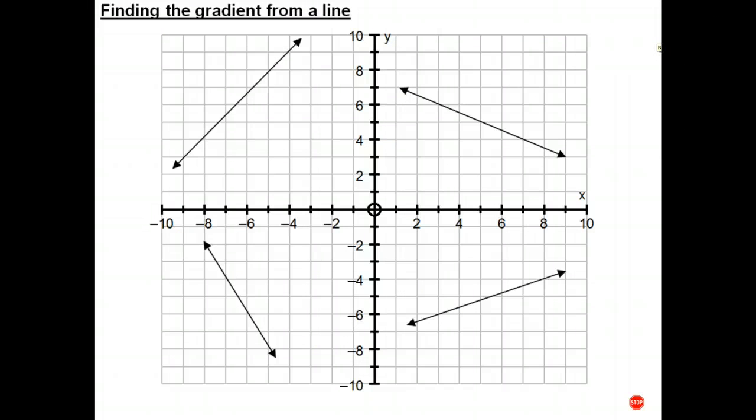Here we have four lines. And what we want to do is find the gradient given the line. So it's pretty much a matter of pick two points on the line. Again, don't pick points that don't go through the corners of the grid. So I can choose that point and that point. Draw in the triangle, and we get a rise of 1, 2, 3, 4. We get a run of 1, 2, 3. So the gradient of that line is 4 thirds.